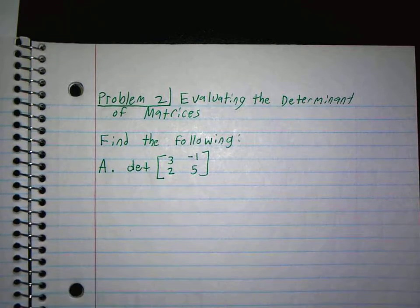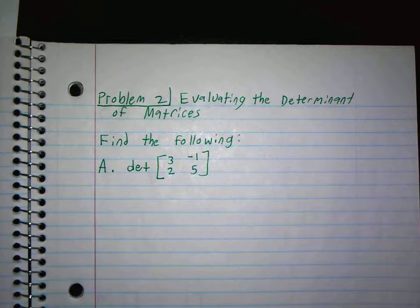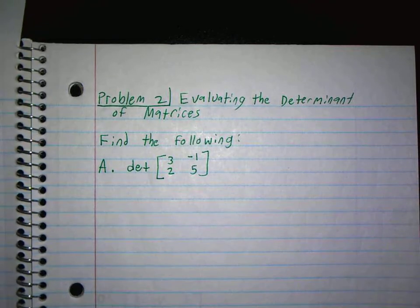The determinant tells us if there is an inverse or not. If the determinant is 0, then this matrix has no inverse. If it's anything but 0, then it does have an inverse. There's a special formula to find the inverse of a 2 by 2 that was in our notes.